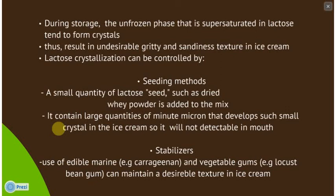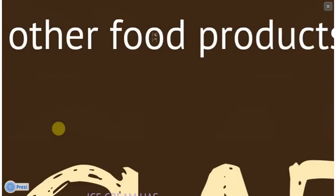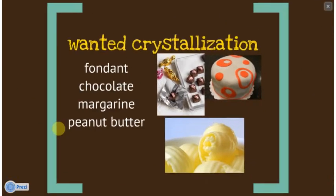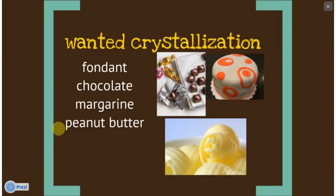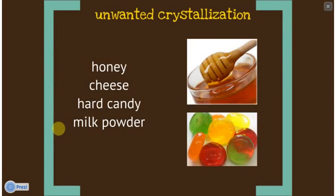The second method is using stabilizers. Use of edible materials such as carrageenan and vegetable gums such as locust bean gum can maintain the desirable texture in ice cream and reduce lactose crystal formation. Besides ice cream, there are also other examples of wanted and unwanted crystallization in other food products. Examples of wanted crystallization include fondant, chocolate, margarine, and peanut butter. Examples of unwanted crystallization include honey, cheese, hard candy, and milk powder.